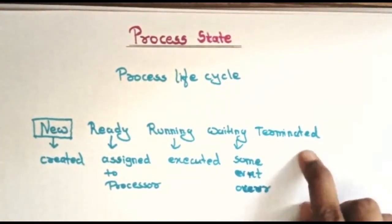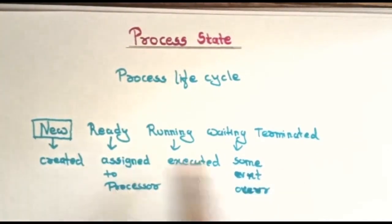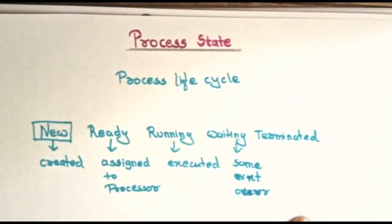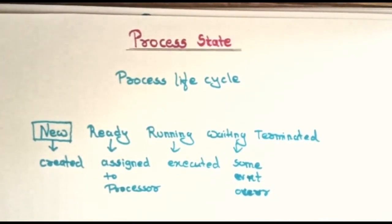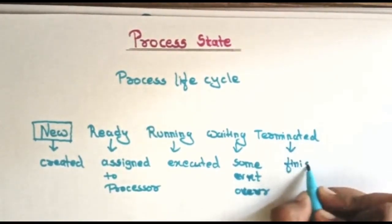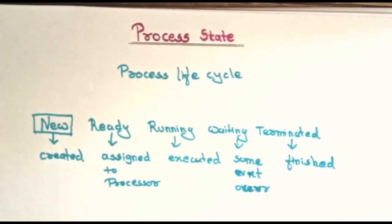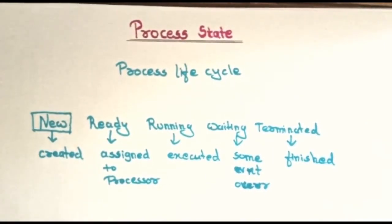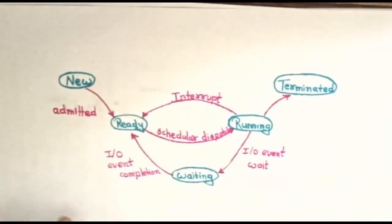The last state is the terminated state. This is the final state in the process life cycle — the process has finished its execution. When all work is completed, the process goes to the terminated state, which is also called the exit state or finish state.